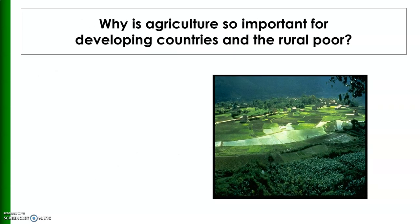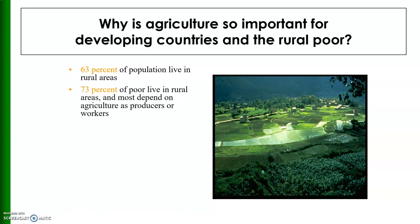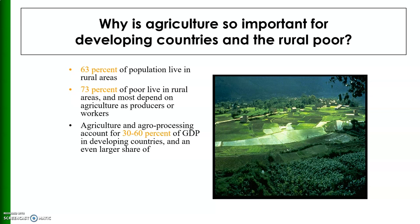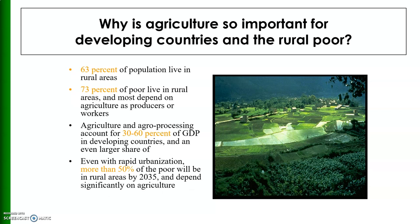A question is: why is agriculture so important for developing countries and the rural poor? In developing countries, 63% of the population lives in rural areas and 73% of the poor live in rural areas, most depending on agriculture as producers or workers. Agriculture and agro-processing account for 30 to 60% of GDP in developing countries. Even with rapid urbanization, more than 50% of the poor will be in rural areas by the year 2035 and will depend significantly on agriculture.